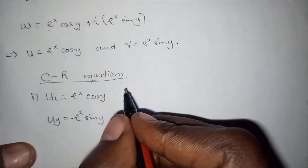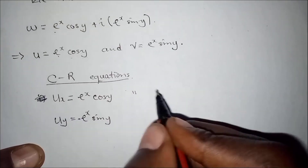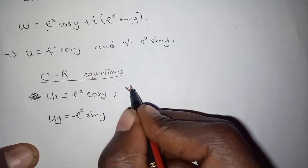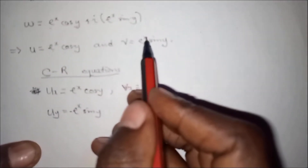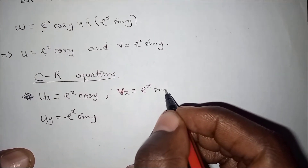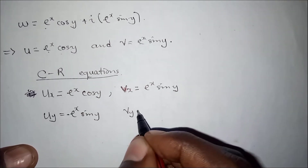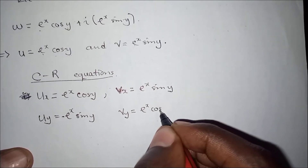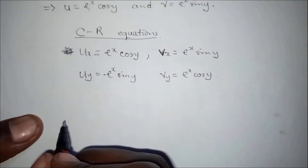Now let's find the partials of v. Differentiating v with respect to x: this part doesn't change, so ∂v/∂x = e^x·sin y. Then v with respect to y: differentiating sin y gives cos y, so ∂v/∂y = e^x·cos y.